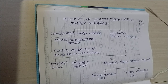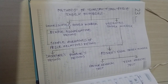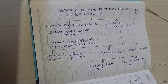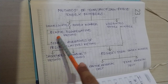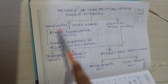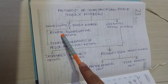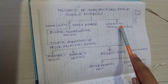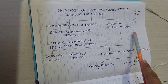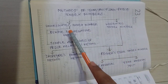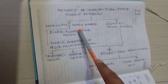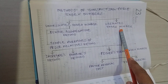Hello guys, today we'll be starting with the problems in index numbers. First, let us look into methods of constructing price index numbers. I have already given you the theory part, but I will briefly explain in this video. We have two methods of constructing price index numbers: one is unweighted index number and the second is weighted index number. In unweighted, you don't assign weights to prices; in weighted, you do assign weights.